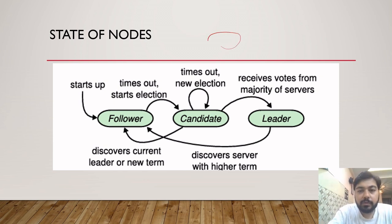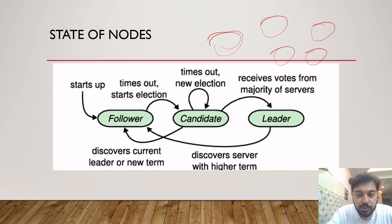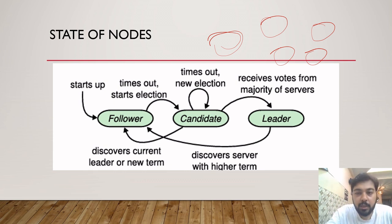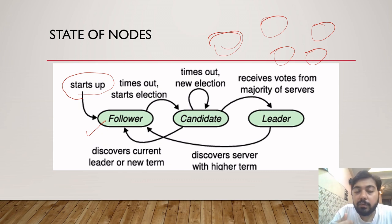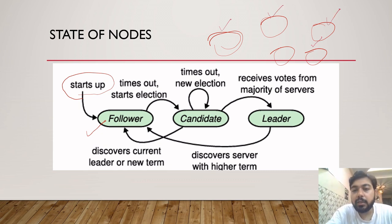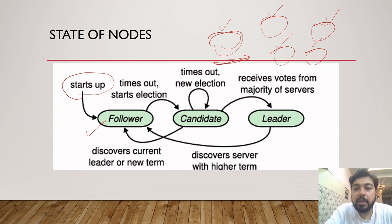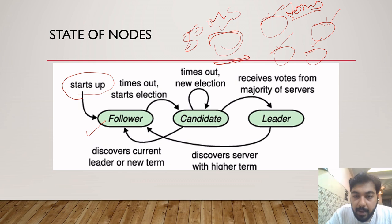So what could be the state of a node? When a cluster comes up, we assume there are an odd number of nodes — let's say four or five. When the cluster comes up, there is no master, no leader, no follower. At the start, each node is actually a follower. They will wait for a leader to come up. Because everyone is a follower and no one says 'I am a leader,' a timeout starts happening — and this timeout is actually random for each node. For one node it might be 50 milliseconds, for another 70 milliseconds, and so on.